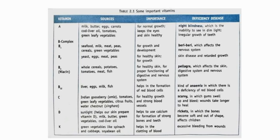Last is Vitamin K. The sources are green vegetables like spinach and cabbage, and soya bean oil. Its importance is that it helps in the clotting of blood. The deficiency disease is excessive bleeding from wounds.